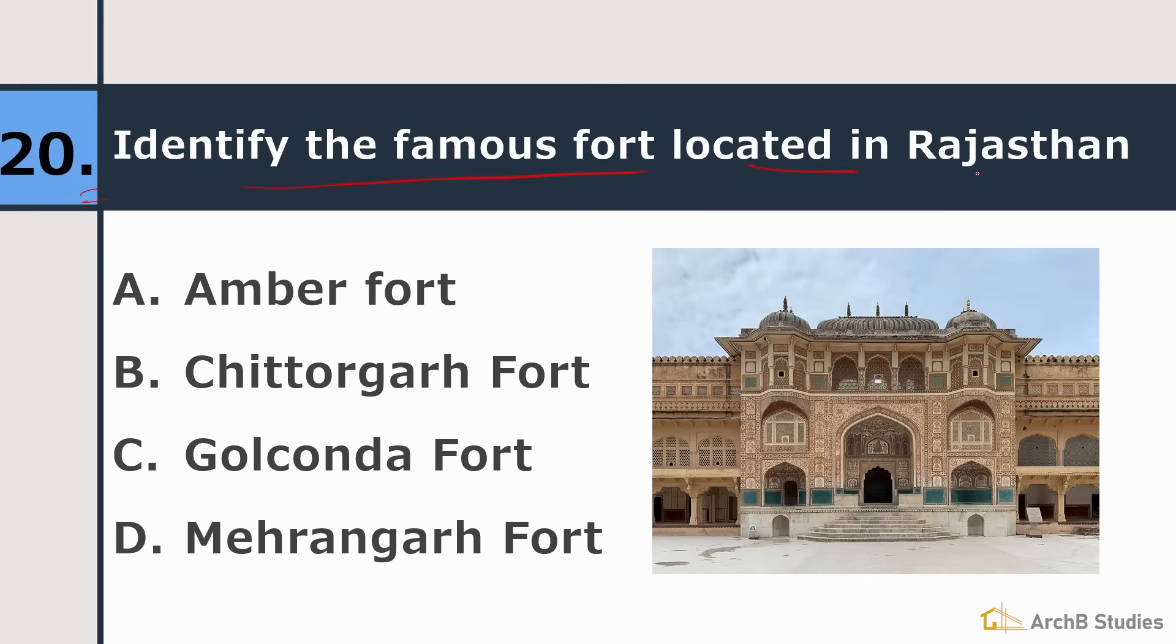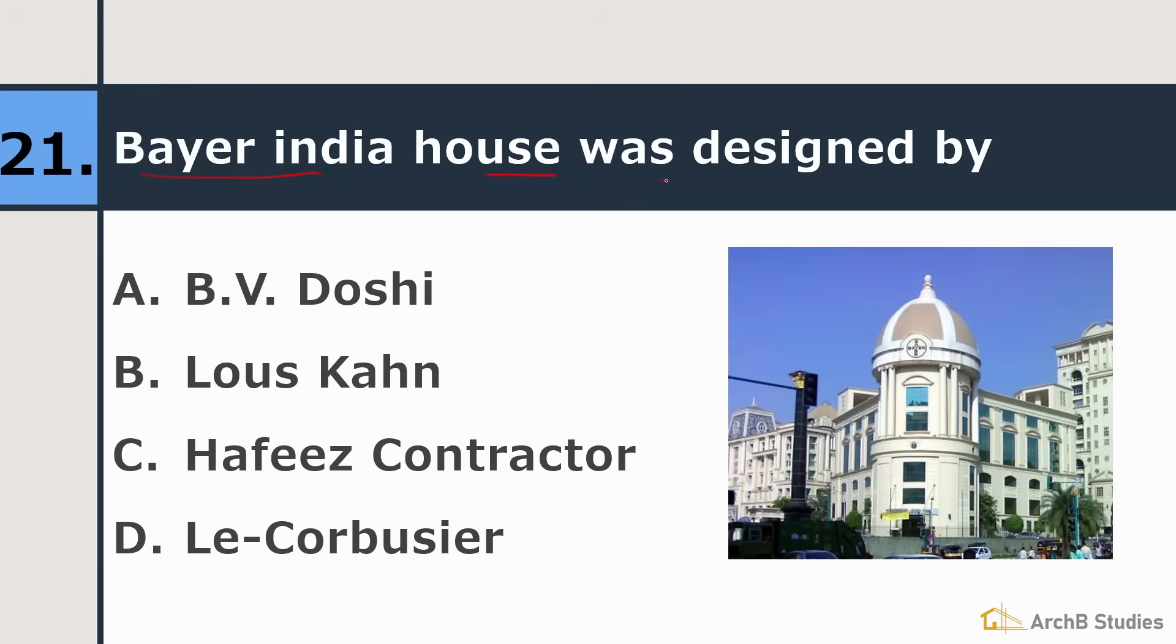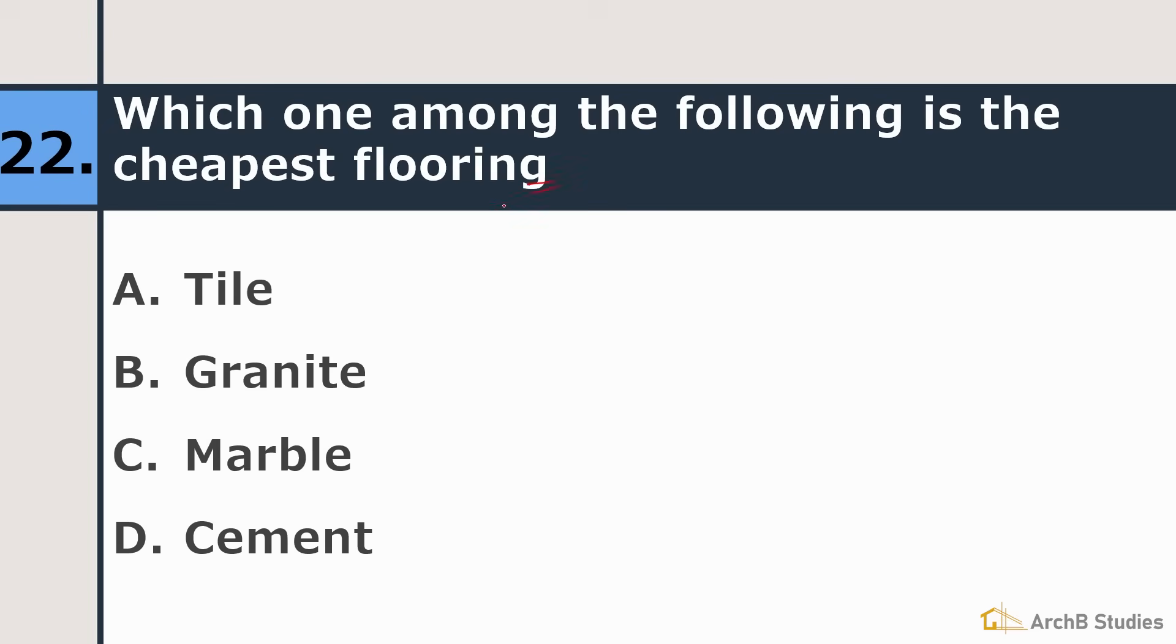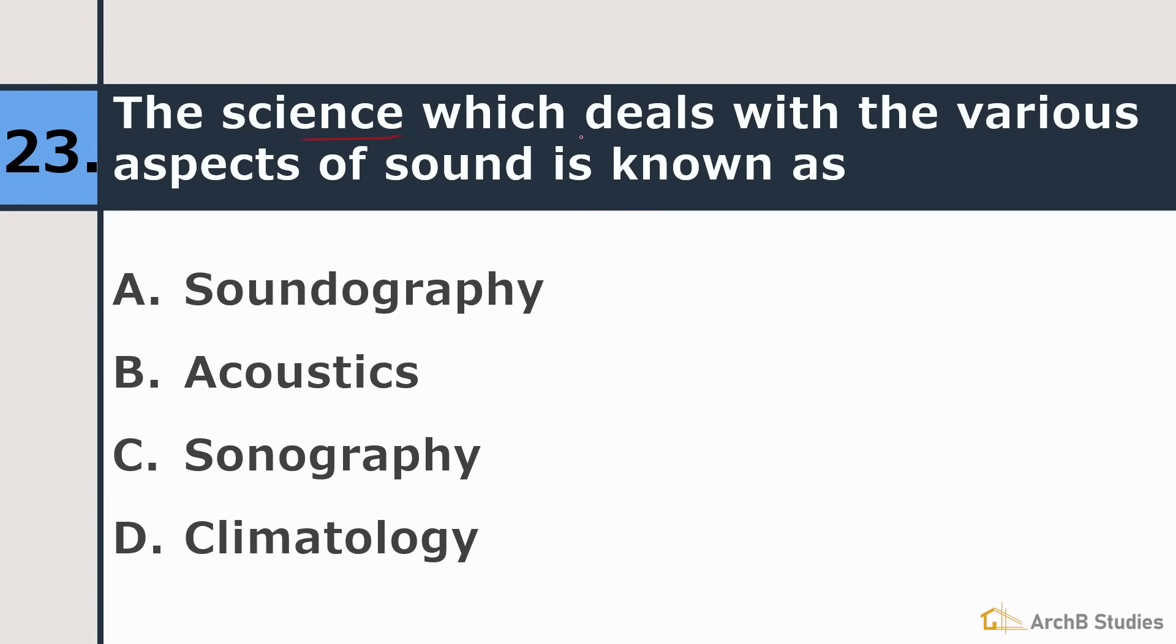20th, identify the famous fort located in Rajasthan. Amber Fort, Chittorgarh Fort, Golconda Fort or Mehrangarh Fort. So right answer is Amber Fort. Where India House was designed by? B.V. Doshi, Louis Kahn, Hafeez Contractor or Le Corbusier. Its right answer is Hafeez Contractor. Which one among the following is the cheapest flooring? Tile, granite, marble or cement. Right answer is cement is the cheapest flooring. The science which deals with the various aspects of sound is known as soundography, acoustics, sonography or climatology? Right answer is acoustics.